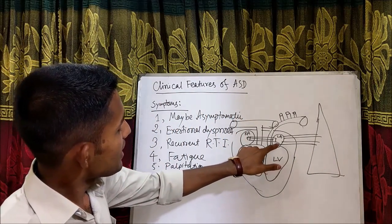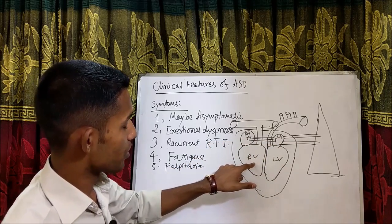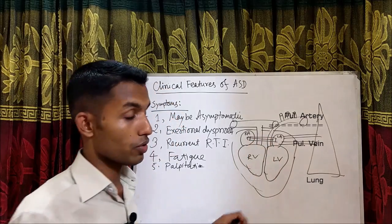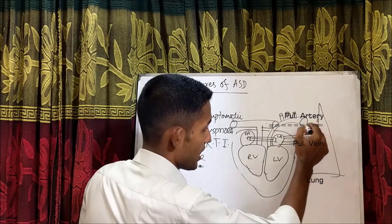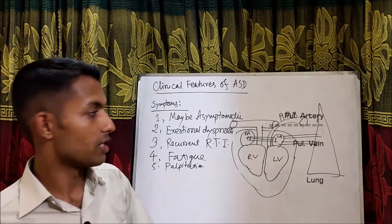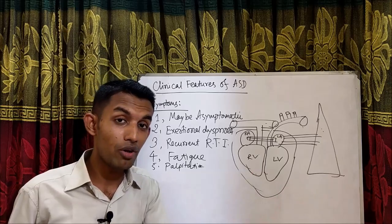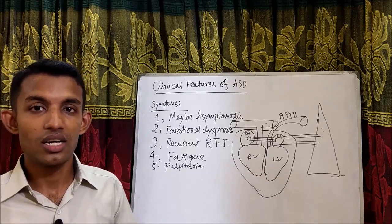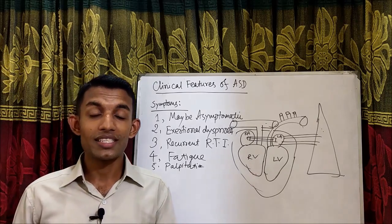In ASD there is communication between left atrium and right atrium, so there is volume overload in the right ventricle. This extra volume goes to the pulmonary artery, causing pulmonary hypertension and pulmonary overload. This pulmonary overload causes interstitial edema, leading to exertional dyspnea. And because of pulmonary edema or pulmonary overload, there is always a chance of infection — that's why there are recurrent respiratory tract infections in ASD.